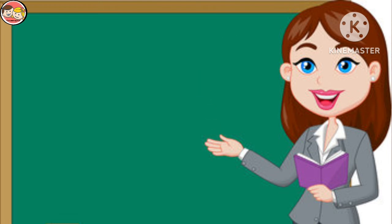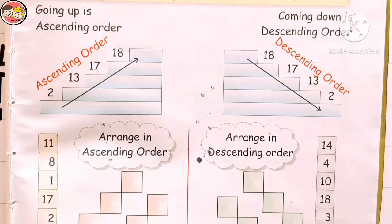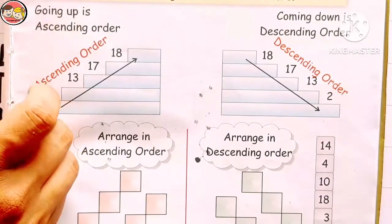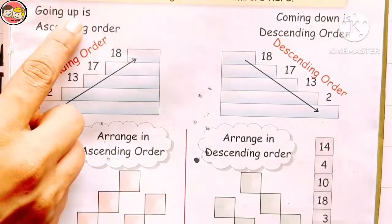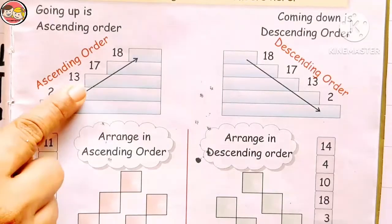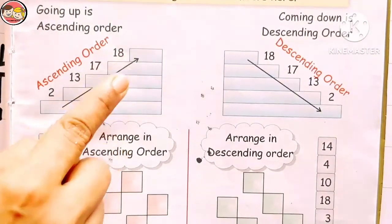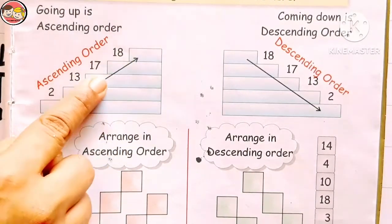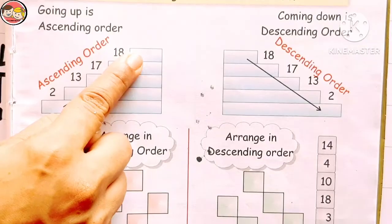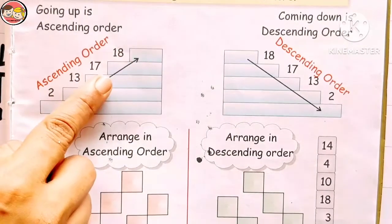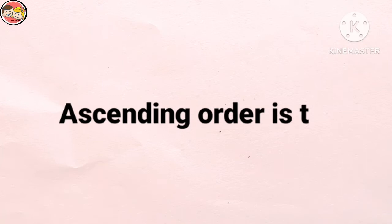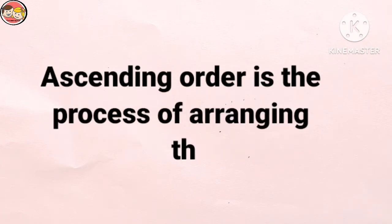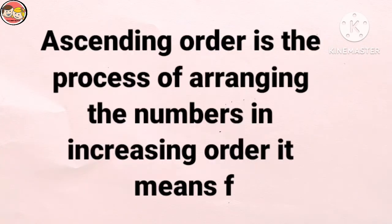You can recall these topics once more. Ascending order — the word ascending means going up. Look at the arrow: it means going up. So ascending means going up. Ascending order is the process of arranging the numbers in increasing order.